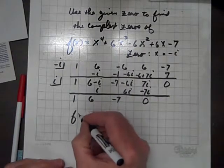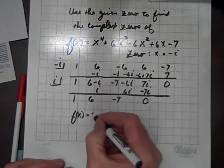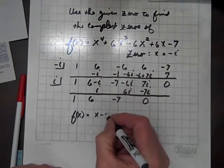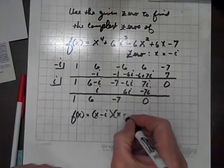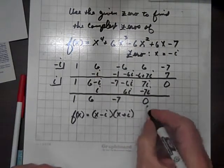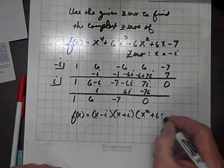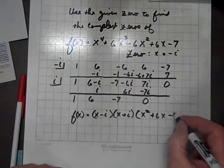Now, we know that f of x, the polynomial, equals, in terms of factors, x minus i times x plus i times x squared plus 6x minus 7.